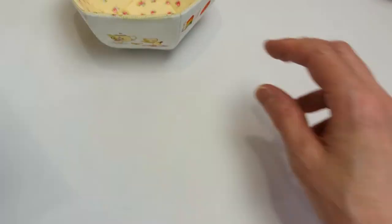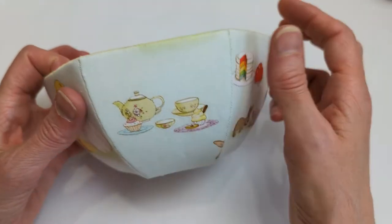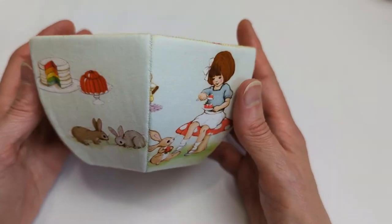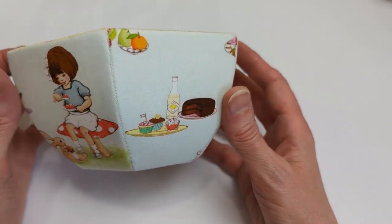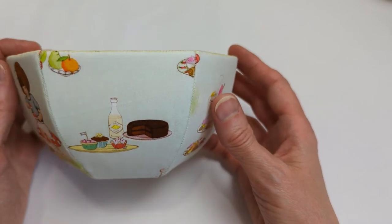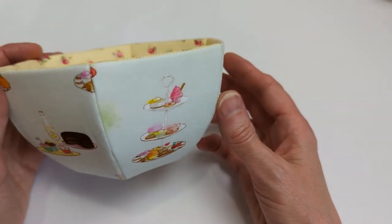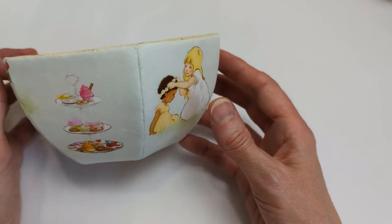This goodness bowl has a deeper shape and is constructed using English paper piecing techniques but substitutes stabilizer for cardstock, which makes the bowl even more wonderful, flexible and washable.